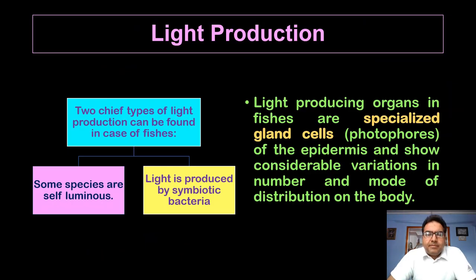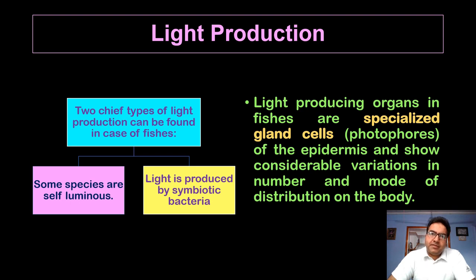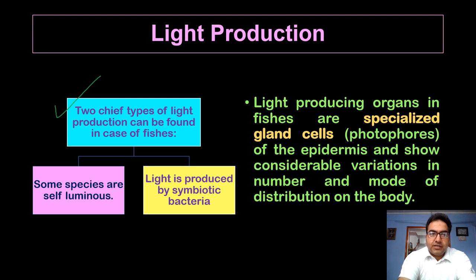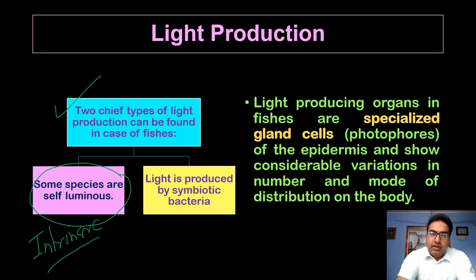How is light produced in fishes? If the light is produced by the fish itself we call that autogenic production. But many times bioluminescent bacteria can be present on the skin or other parts of the body and act as the source of light — we call this an extrinsic source. So there are two chief types: some species are self-luminous with an intrinsic source, or the light is produced by symbiotic bacteria, making it an extrinsic source.